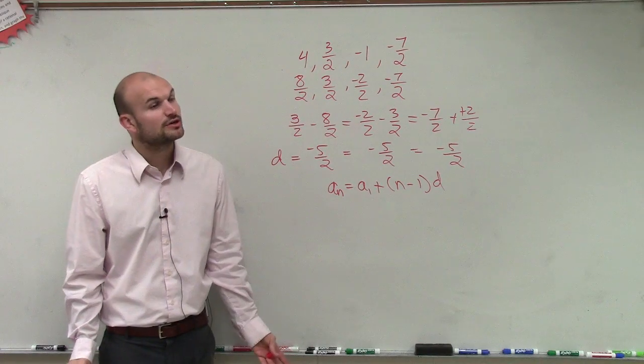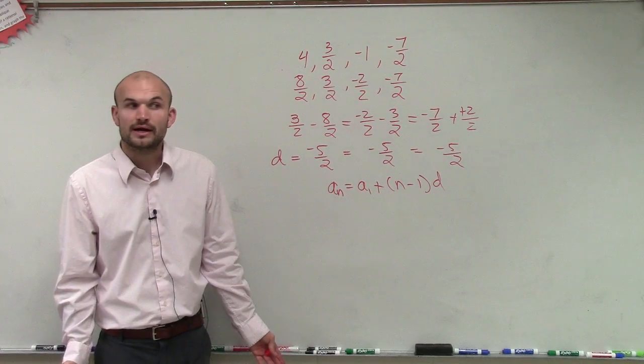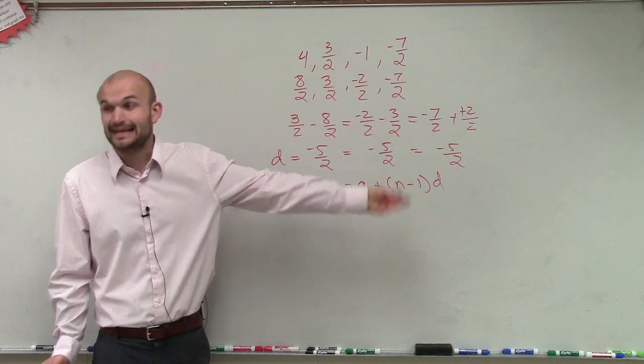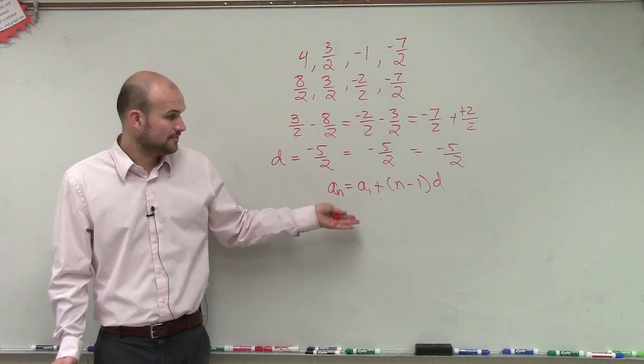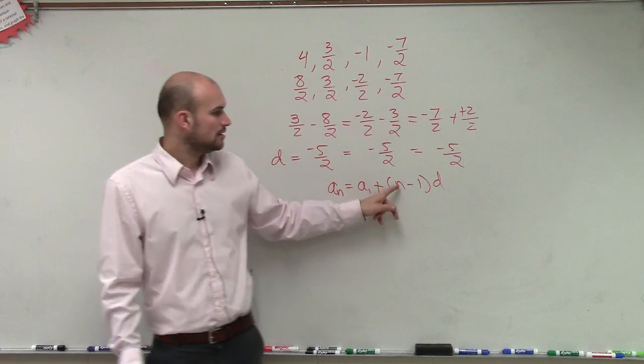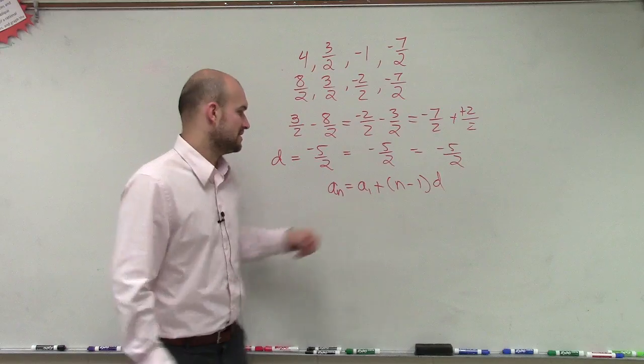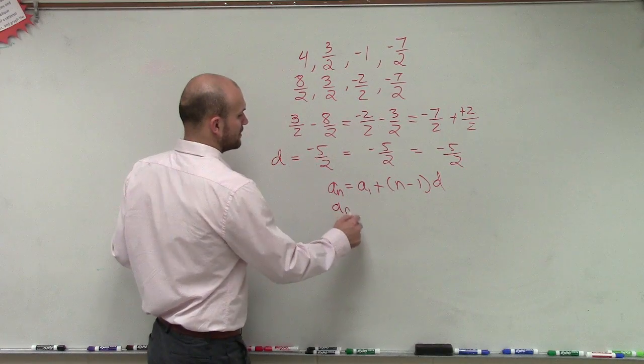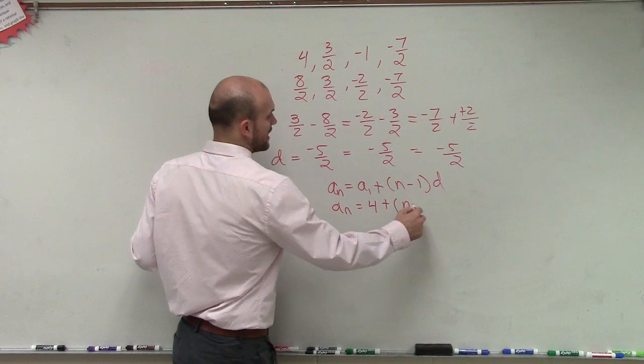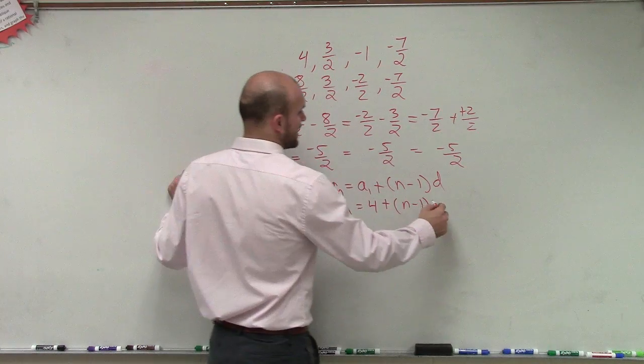We're just trying to use our formula. So we know for a sub n, which can be for any value, we know what a sub 1 is, which is 4, n minus 1, and then here's our d. So we just say a sub n is going to be 4 plus n minus 1, and then our d is negative 5 halves.